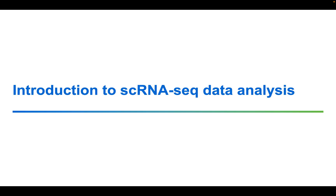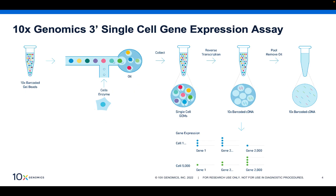Let's get started with our introduction to single-cell RNA-seq data analysis by looking at 10x's technology. We use microfluidics to mix a single cell with a barcode-containing gel bead in a high-throughput fashion. Through a series of reactions, we create a barcoded cDNA library suitable for next-generation sequencing. After the library is sequenced, the reads are aligned to a reference genome and gene expression is quantified.